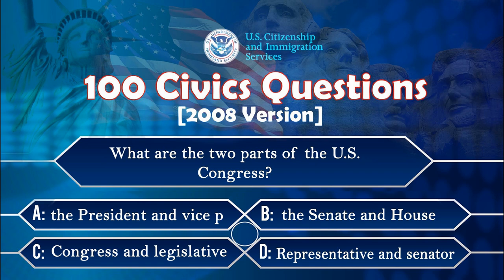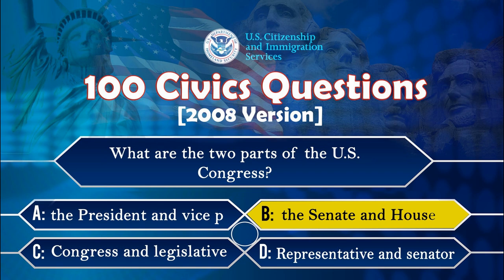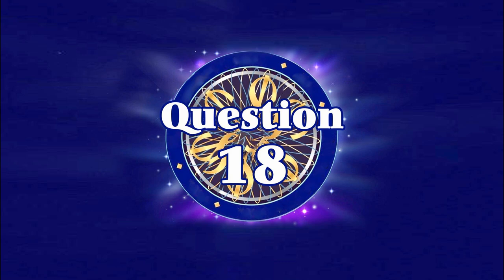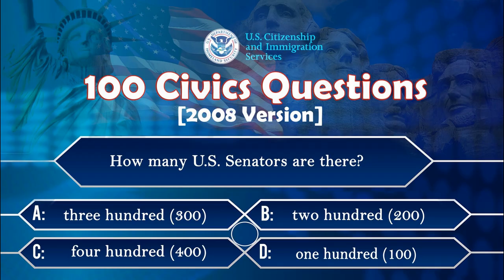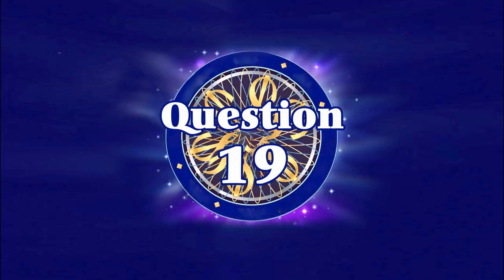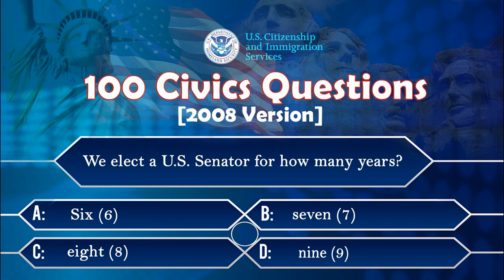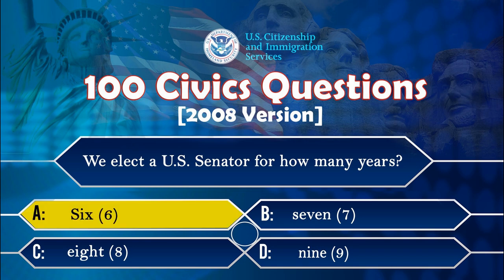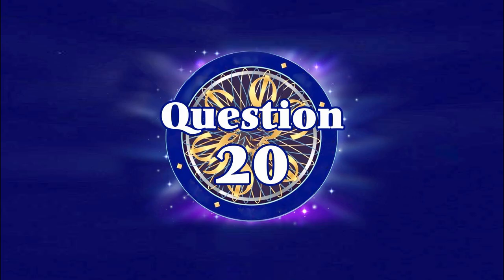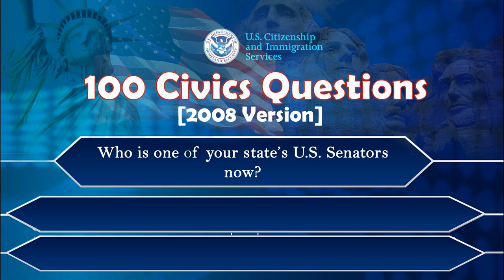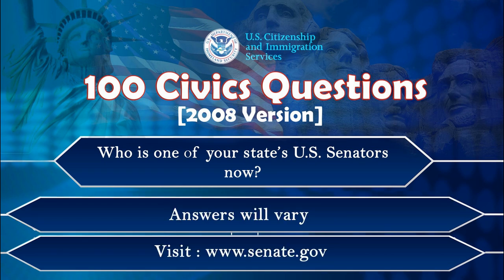What are the two parts of the U.S. Congress? The Senate and House. How many U.S. Senators are there? One hundred. We elect a U.S. Senator for how many years? Six. Who is one of your state's U.S. Senators now? Answers will vary. Please check the link in description.